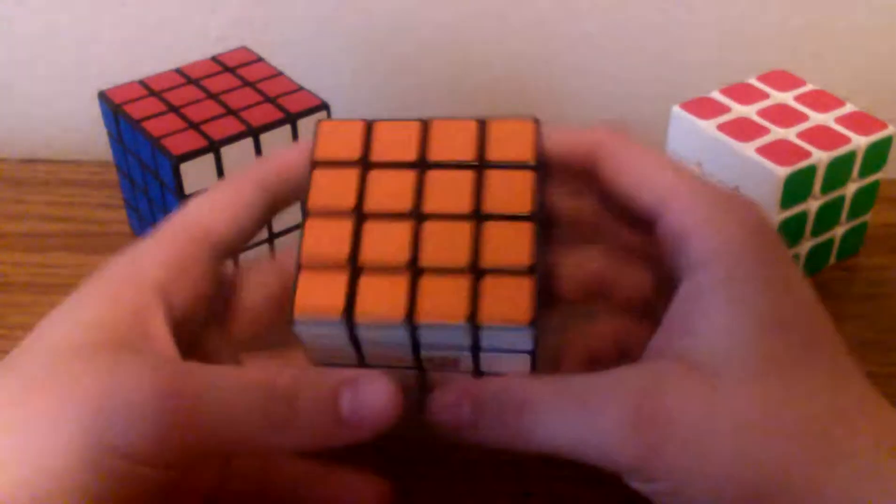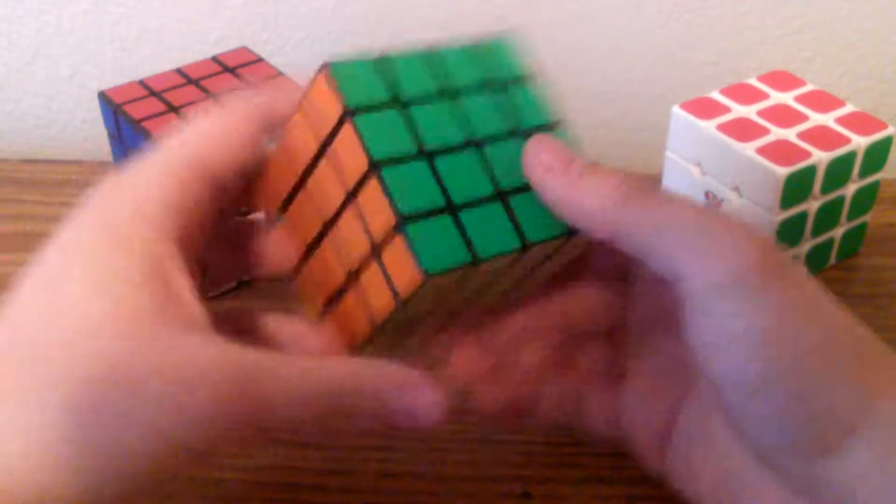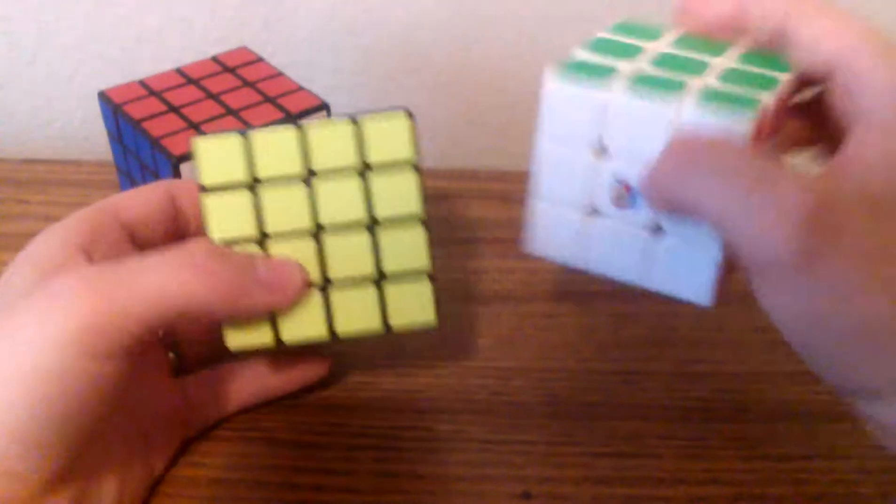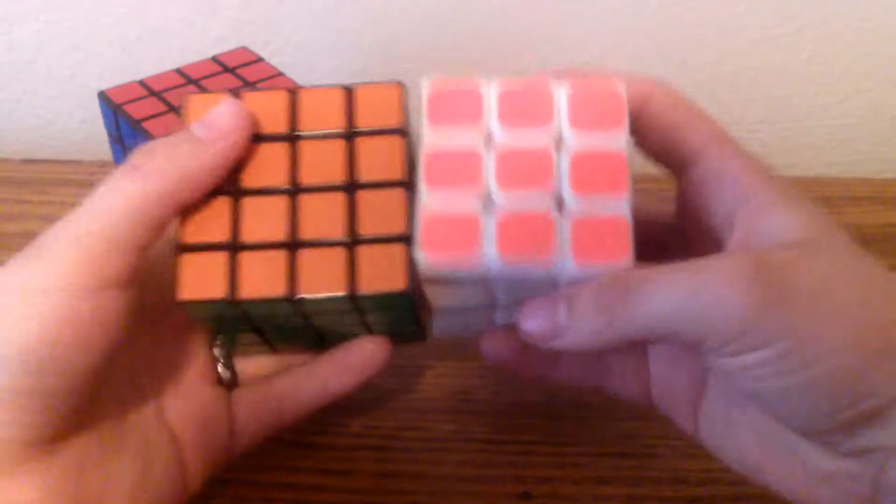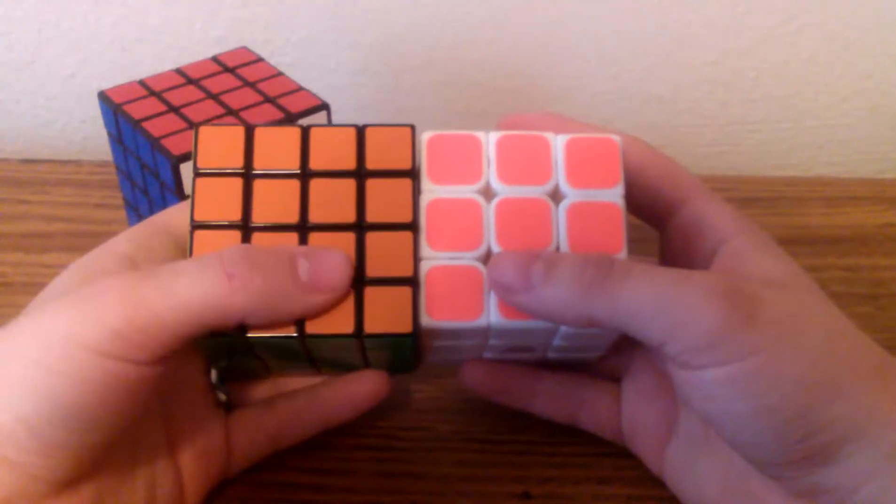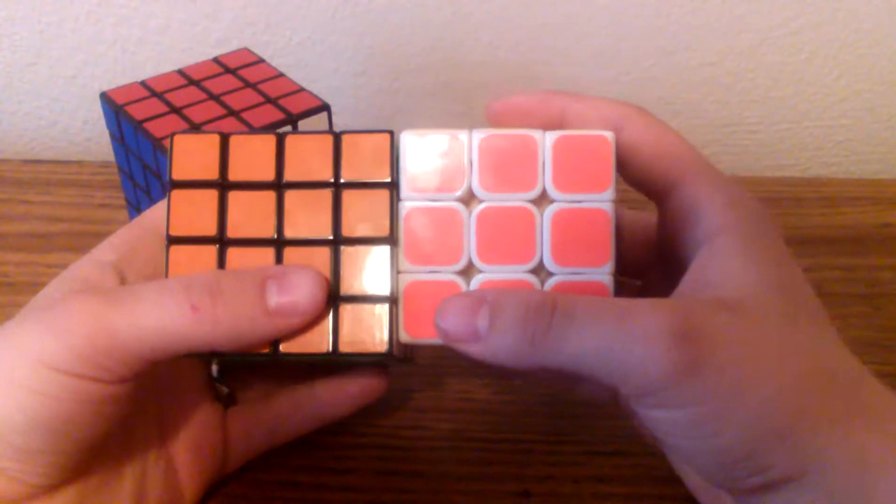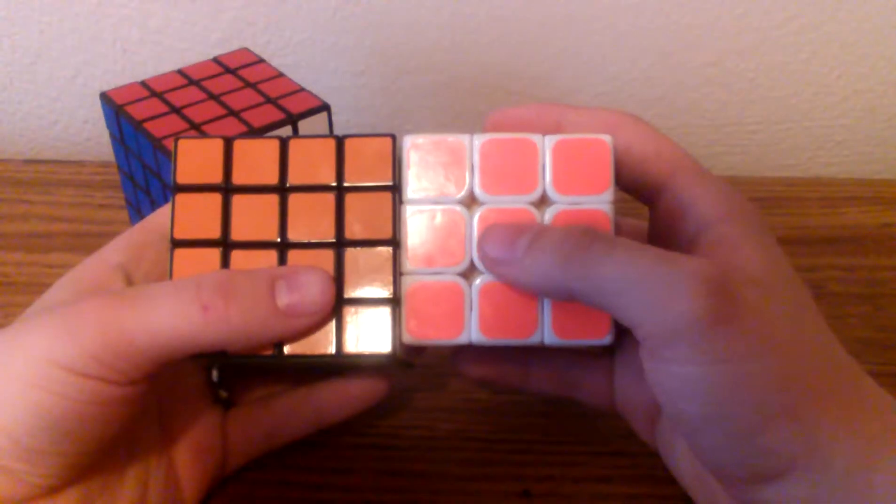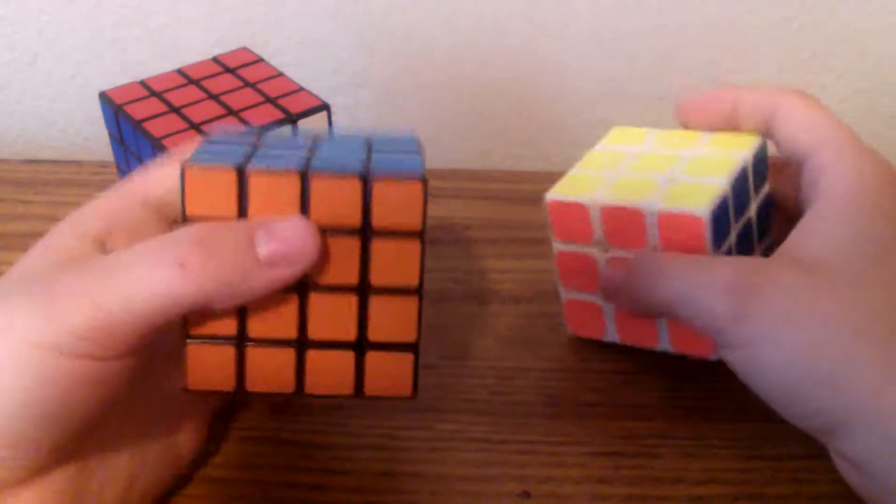So when we first take the Shinshu out of the box, we first see very bright, vibrant shades, much like the shades of a Qilong. The only real difference is the orange. The Shinshu has more of a dull orange, while the Qilong has more of a pinkish orange, which strangely enough, I actually prefer the orange on the Qilong over the orange on the Shinshu.